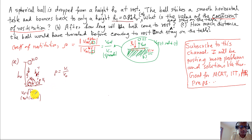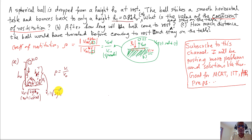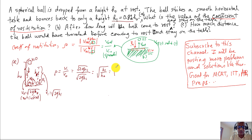So rho = V1/V0 = √(2gh1) / √(2gh0). The 2g cancels out, giving rho = √(h1/h0). Since h1/h0 is given as 0.81, the coefficient of restitution is √0.81 = 0.9. That's the answer for part A.